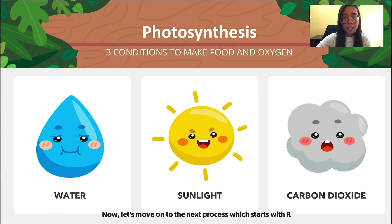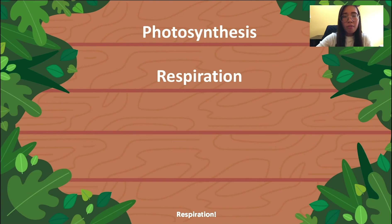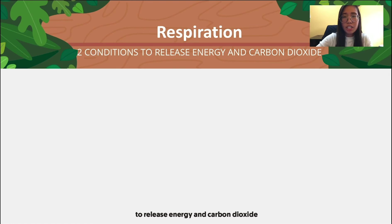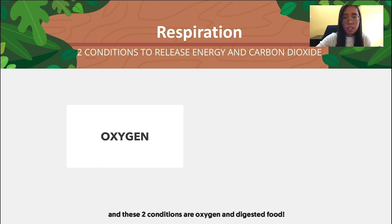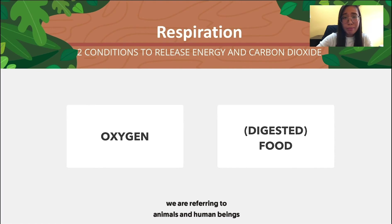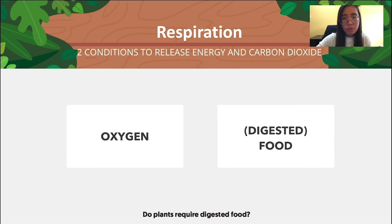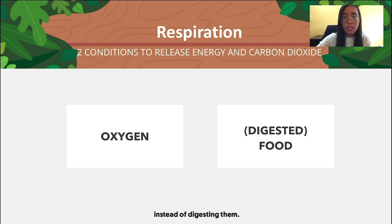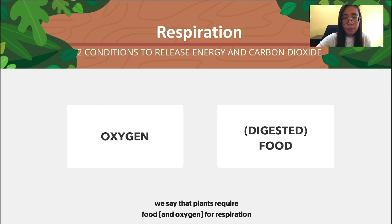The next process starts with R and it stands for respiration. Respiration is a process that requires two conditions to release energy and carbon dioxide. These two conditions are oxygen and digested food. Whenever we talk about digested food, we are referring to animals and human beings eating and digesting food. Plants do not require digested food because they make their own food instead. So rather than saying plants require digested food, we say plants require food for respiration to release energy and carbon dioxide.